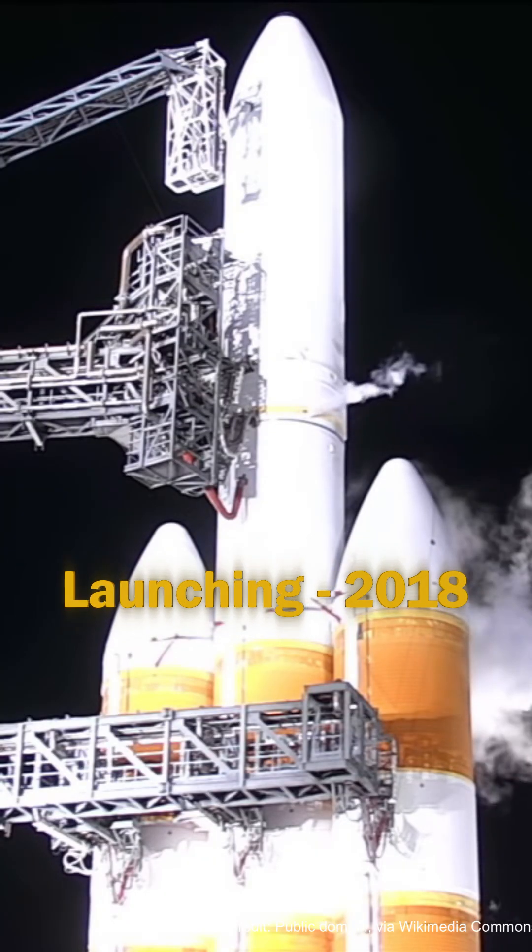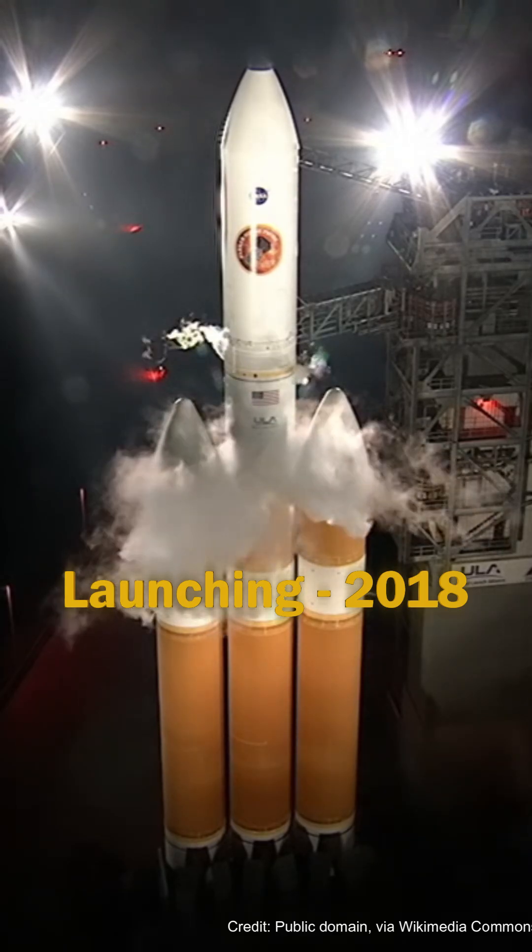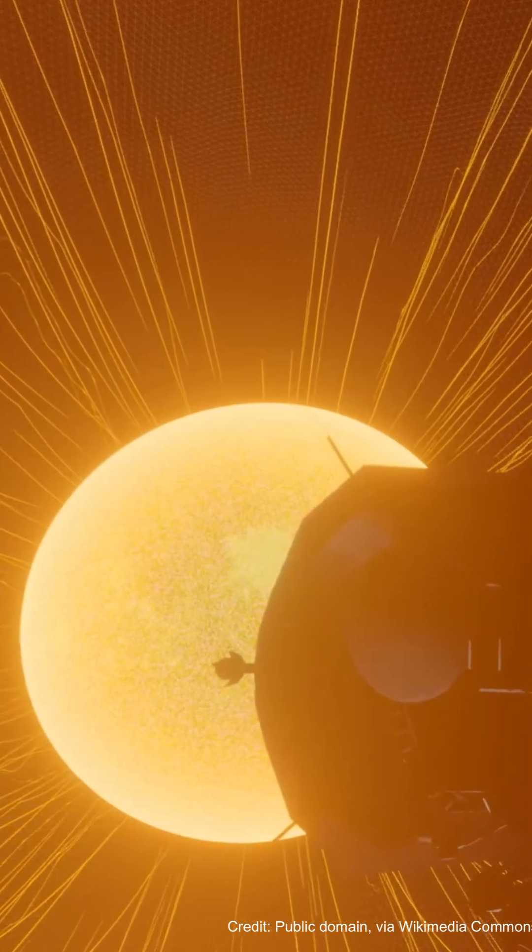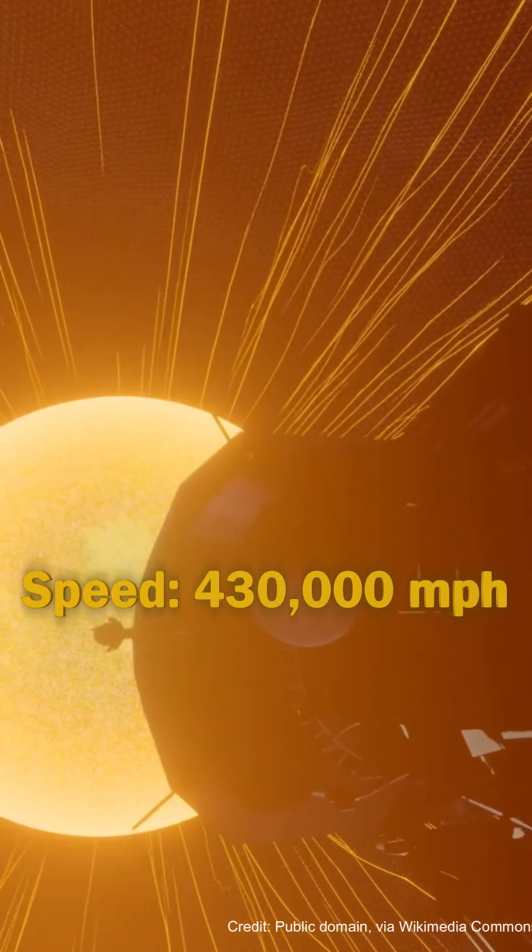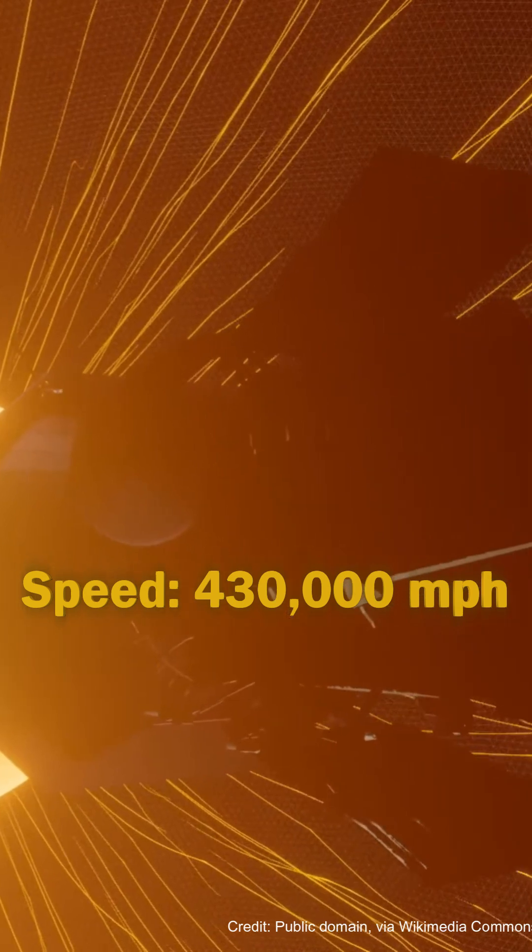Launched in 2018, the Parker Solar Probe is the fastest spacecraft ever built, reaching speeds of up to 430,000 miles per hour. That's fast enough to go from Earth to the moon in just under an hour.